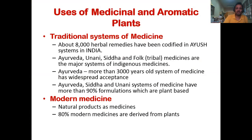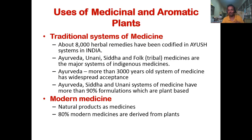A medicinal plant is one which produces raw drugs being used in various systems of medicine. Similarly, aromatic plants produce a particular kind of smell or aroma which we exploit in the preparation of scents, in aromatherapy, and many other purposes. Medicinal and aromatic plants are being used in various traditional systems of medicines.